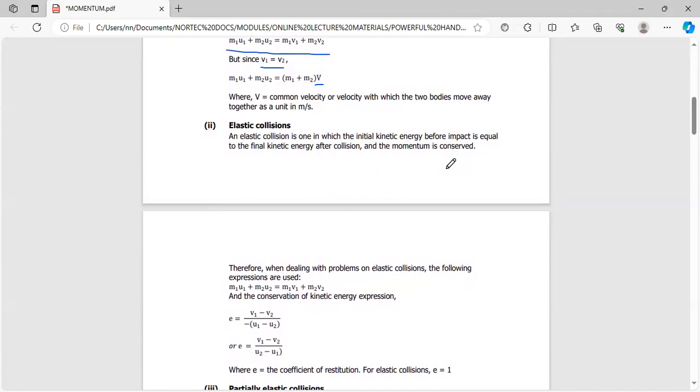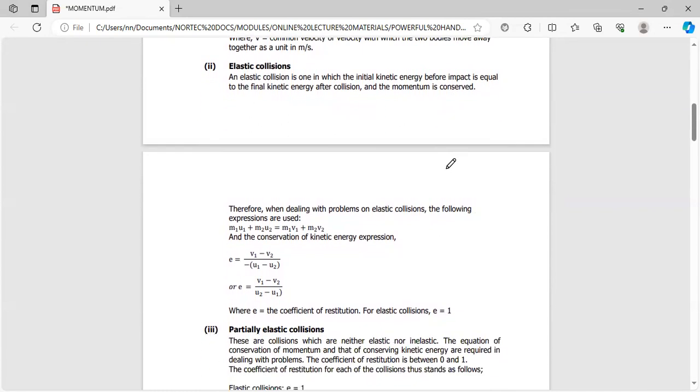For an elastic collision, the two bodies normally move out with different velocities. The formula we use is the one for conservation of momentum before and after impact: M1U1 plus M2U2 equals M1V1 plus M2V2.